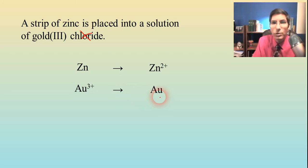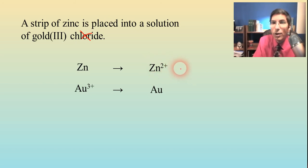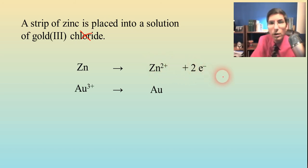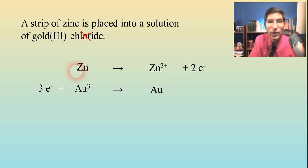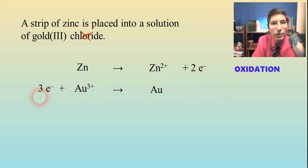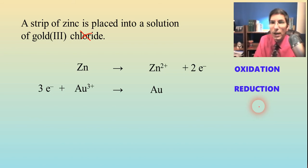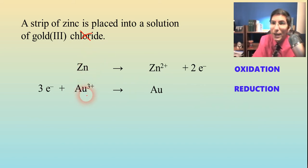Now we have to balance the charges. For zinc, we have zero on the left and +2 on the right, so we put two electrons on the right side. For gold, we have +3 versus zero, so we add three electrons to the left side. In the first half reaction we're losing electrons — that is oxidation. The gold ions are gaining electrons — that's reduction. Zinc is being oxidized and the gold(III) ions are being reduced.